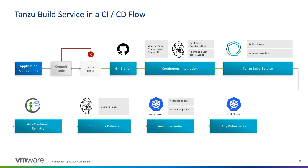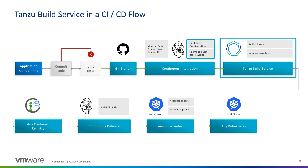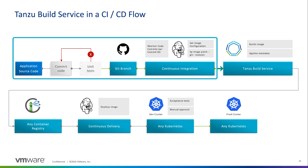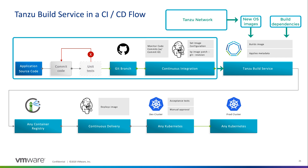Let's take a look at how Tanzu Build Service might fit into your existing continuous delivery workflow. Tanzu Build Service does not replace your existing pipeline, but rather fits in the middle, where container images are created — where many organizations currently may be using build scripts or Dockerfiles. With Tanzu Build Service, customers can configure their CI systems to listen for updates on the Tanzu network and push those to Tanzu Build Service, triggering a container rebuild for all images using those updated dependencies.